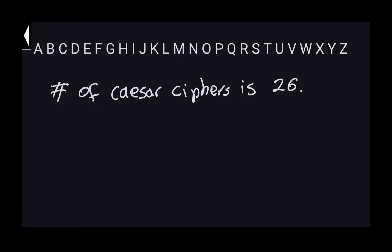Hello and welcome again. In a previous video, we were discussing the number of Caesar ciphers that we have when we have an alphabet of 26 characters, like in the English alphabet. We found out that the number of ciphers corresponds to the number of symbols, which in our case is 26. This is a very important fact because this number is small and it will help us crack the Caesar cipher.